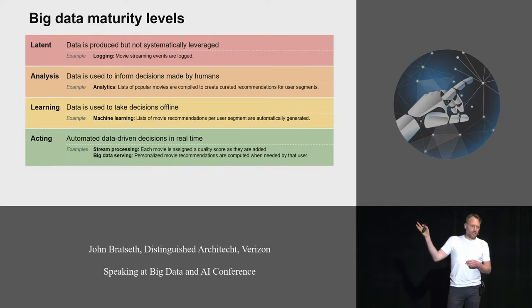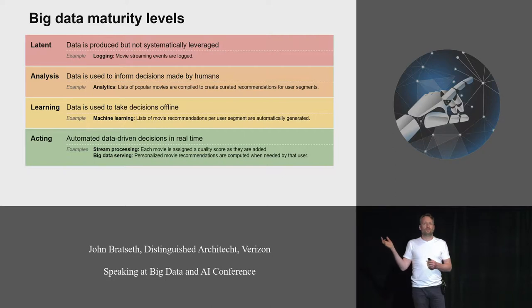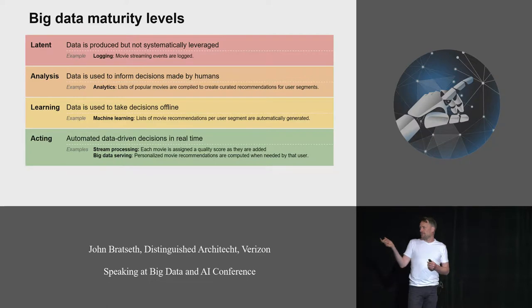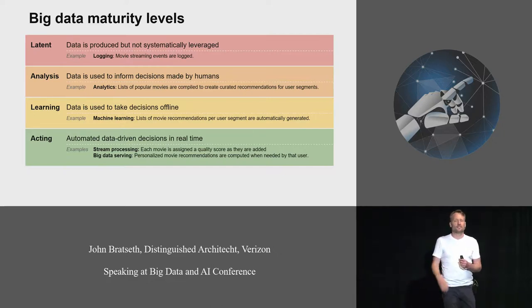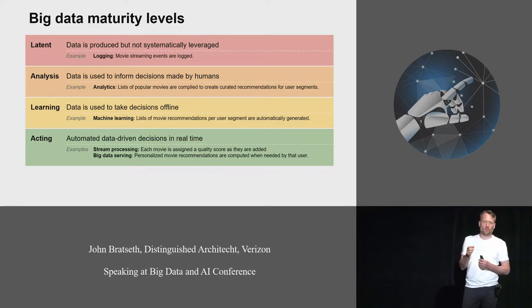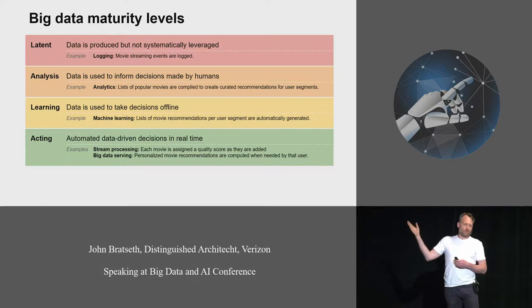There are two interesting and very different sub-cases here. The most common one is what's called either stream processing or model serving, where you have a single data item and you want to evaluate your model. If it's a stream of data it's called stream processing, or if you're doing the request-response fashion, it's called model serving. For example in the movie case, it would be assigning a quality score to each movie as you add it to your system.